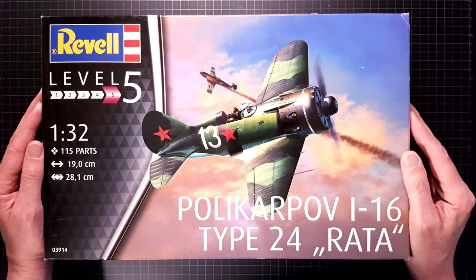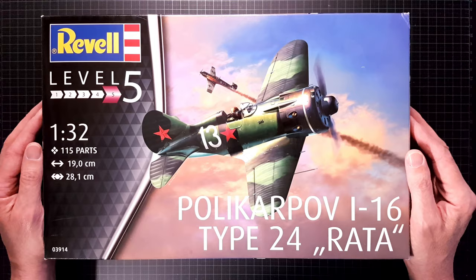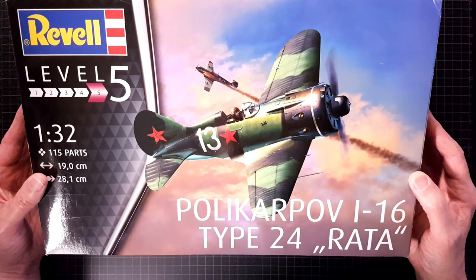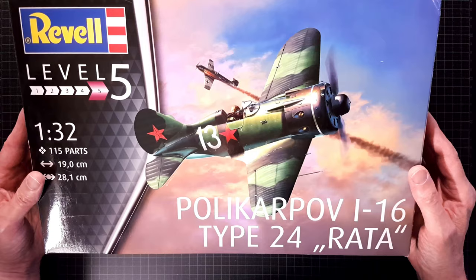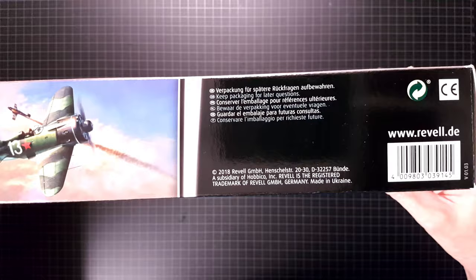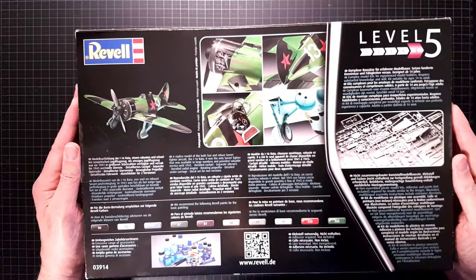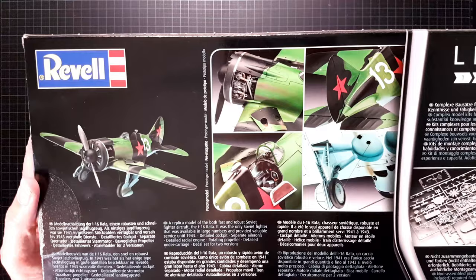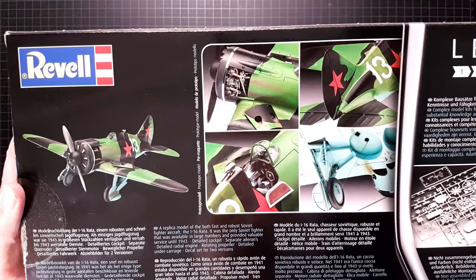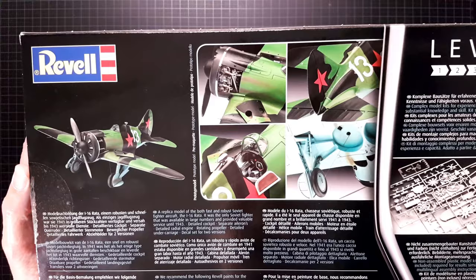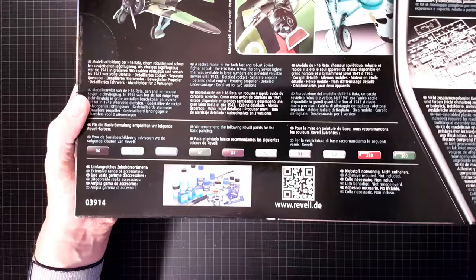If we look at the box, we have some box art of the aircraft in black and green livery. On the sides we have the usual information about the kit. On the backside we have some photos of what I think is a built-up model, some information about the aircraft, and paint callouts.